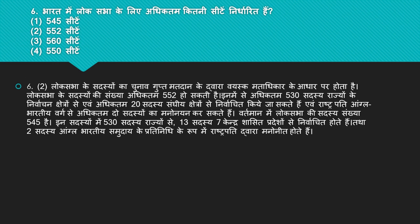Question hai: Bharat mein Lok Sabha ke liye adhiktam kitni seeten nirdharit hain? 4 options hain: 545 seeten, 552 seeten, 560 seeten, 550 seeten. Iska right answer hai number two — 552. Rashtrapati Anglo-Indian samudaay se adhiktam 2 sadasyon ka manoniyan kar sakte hain. Lok Sabha ki sadasyon sankhya 545 hai, jismein 530 sadasya rajyon se aur 13 sadasya kendrashaasit pradeshon se nirvachit hote hain, tatha 2 sadasya Anglo-Indian samudaay ke pratinidhi ke roop mein Rashtrapati dwara manonit hote hain.